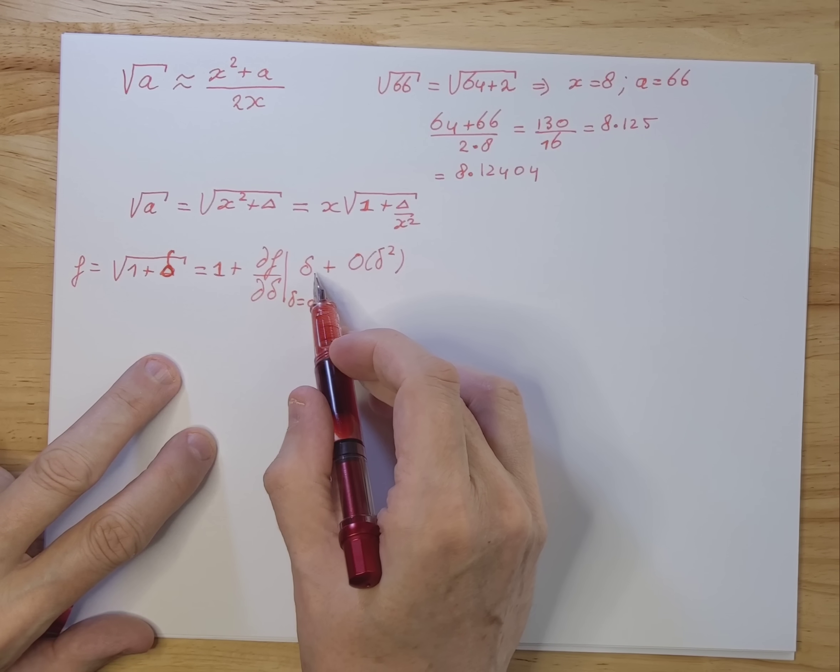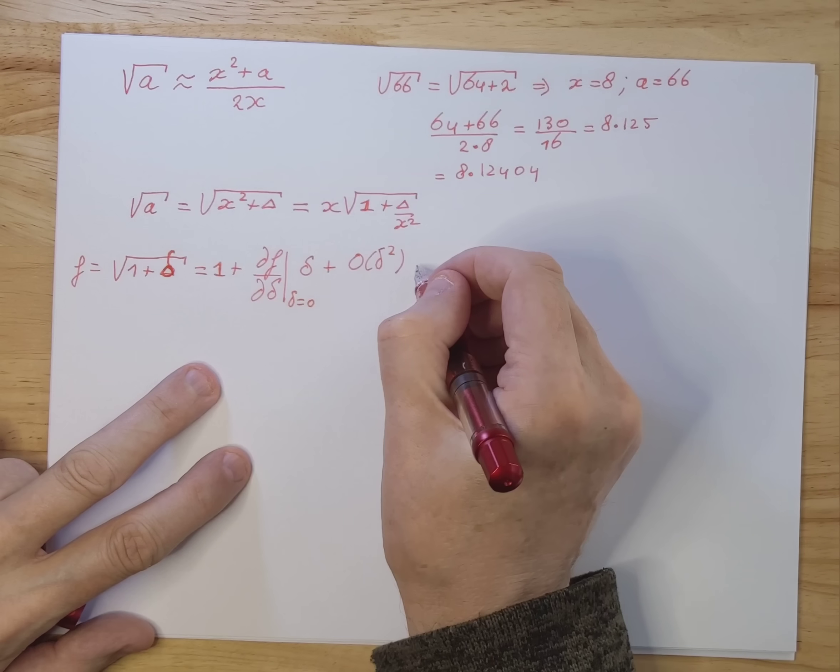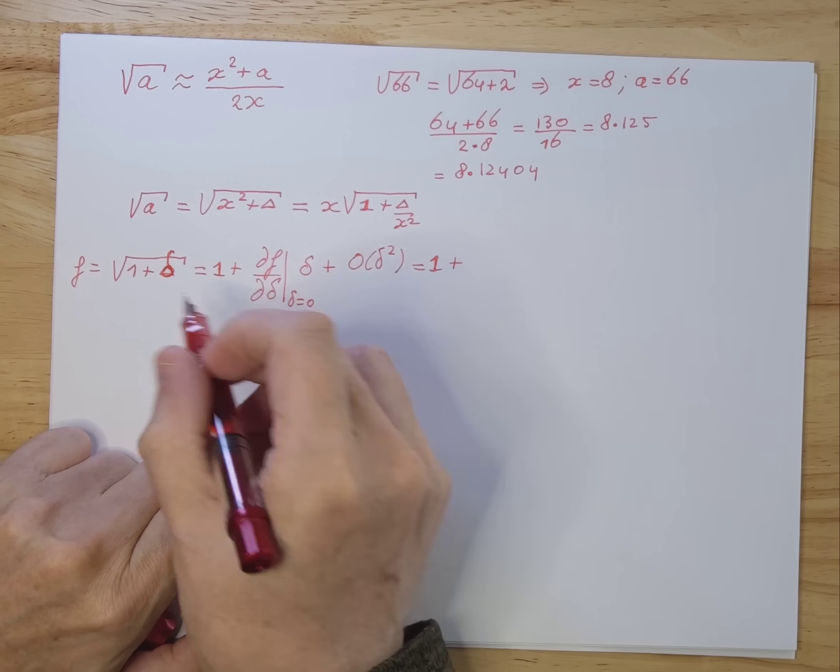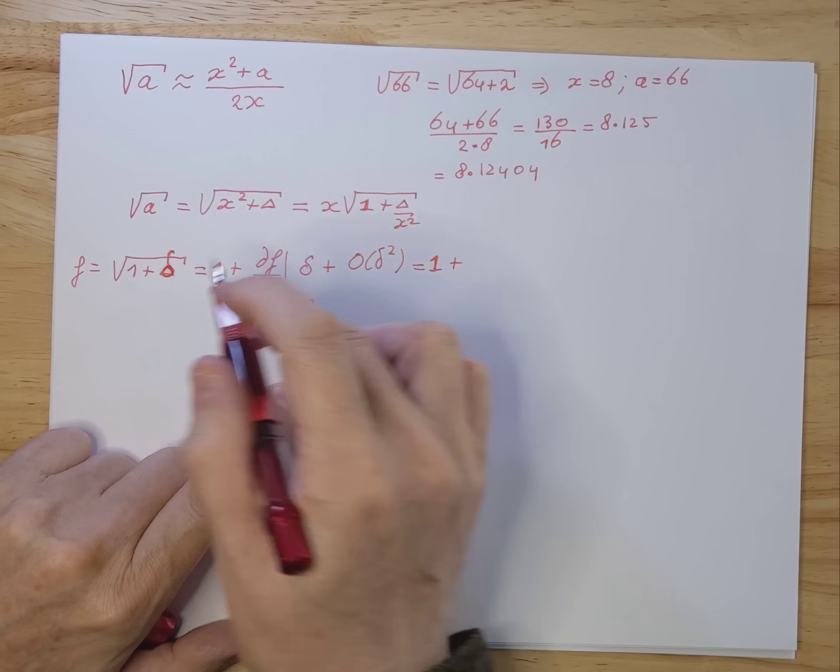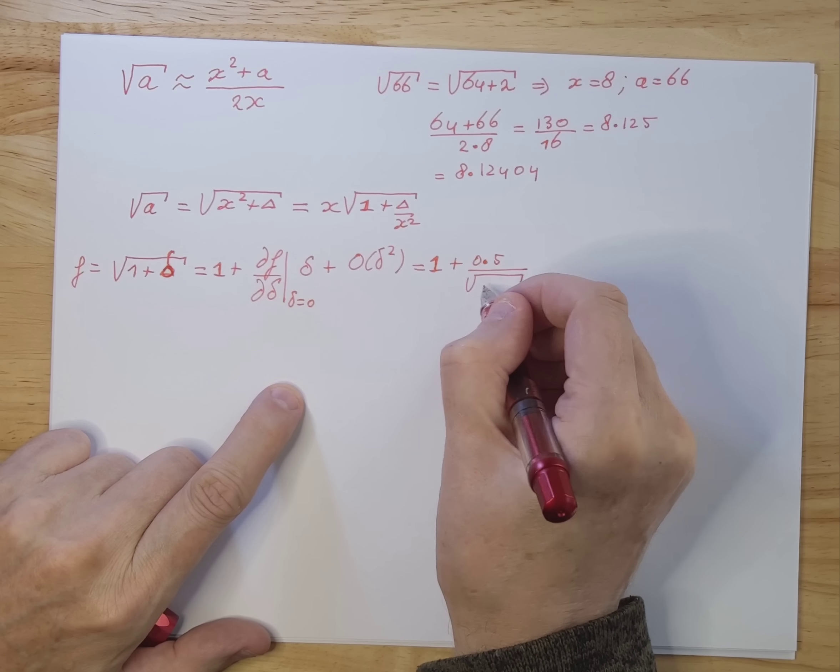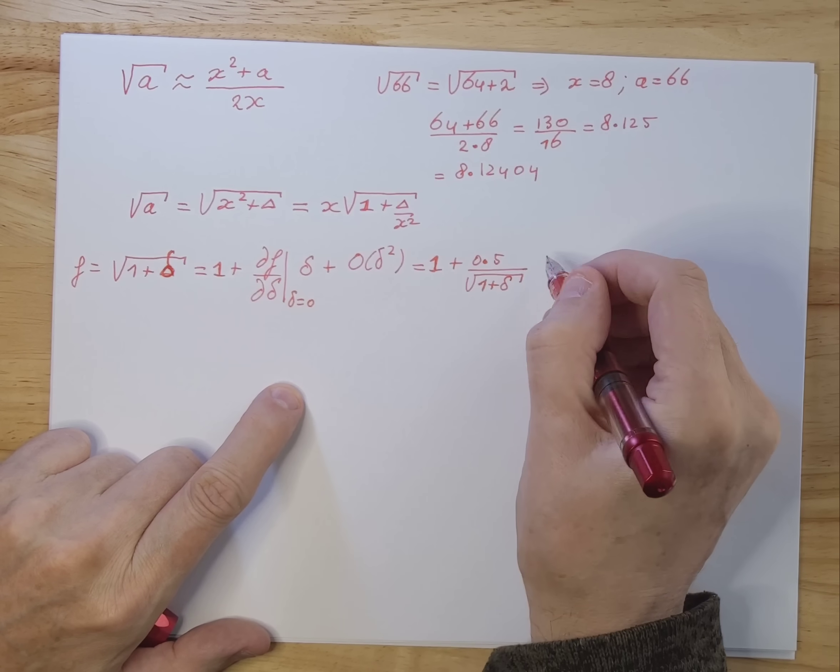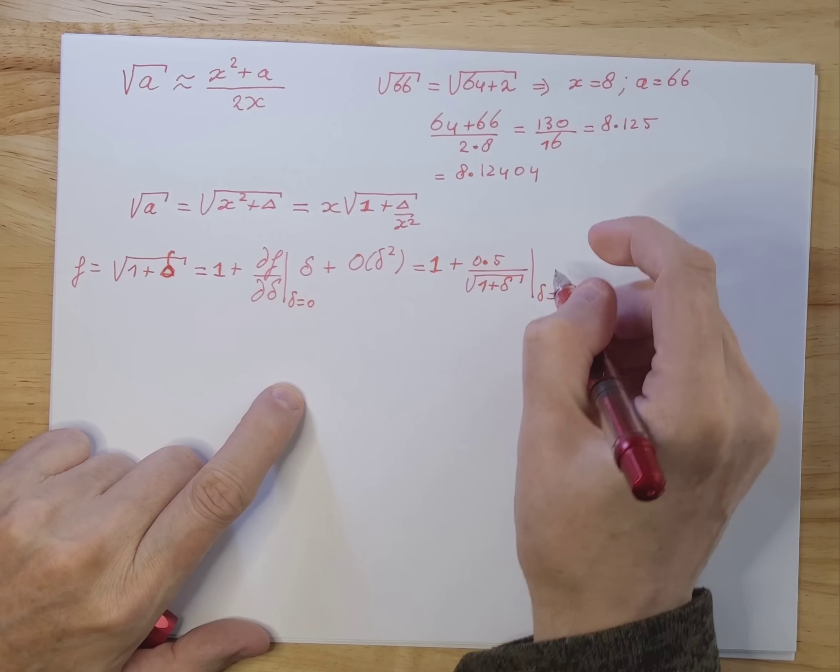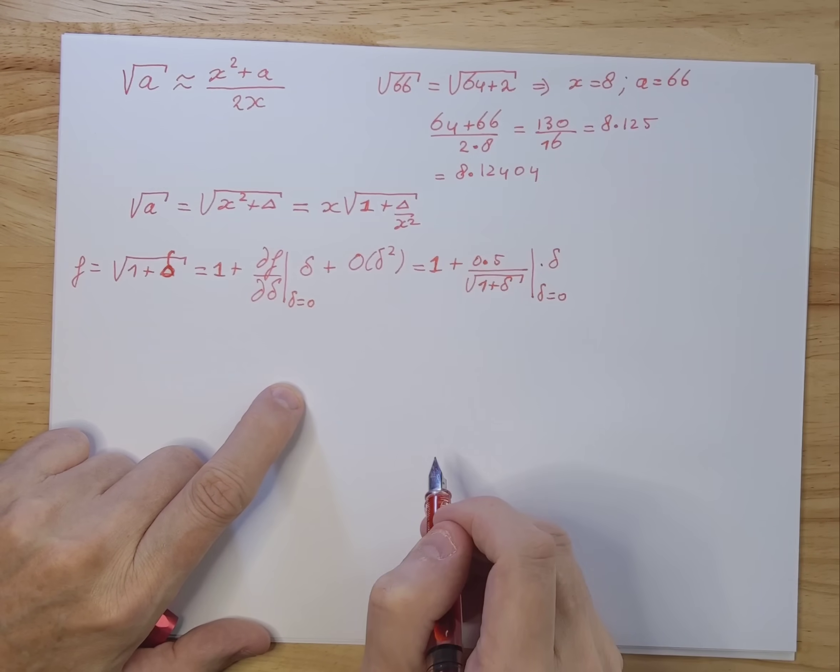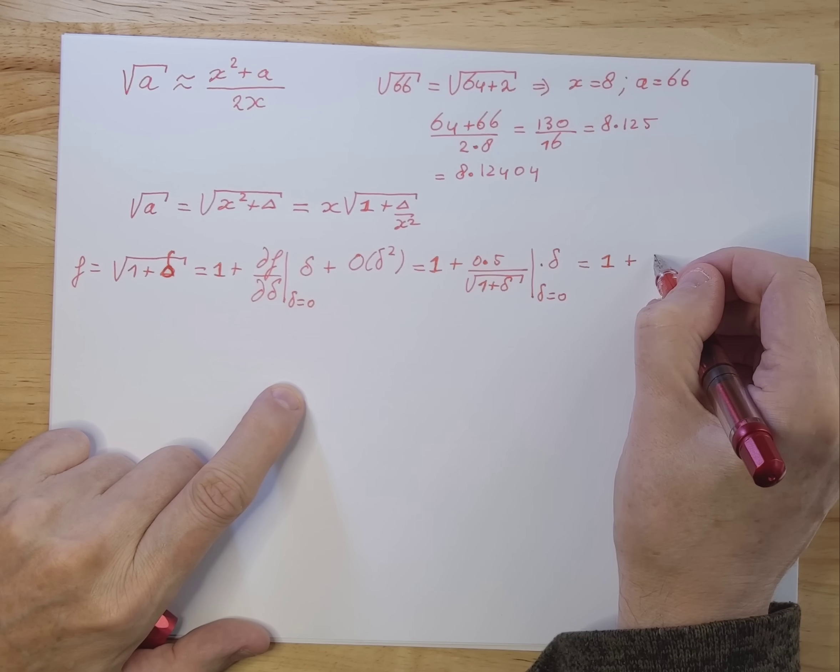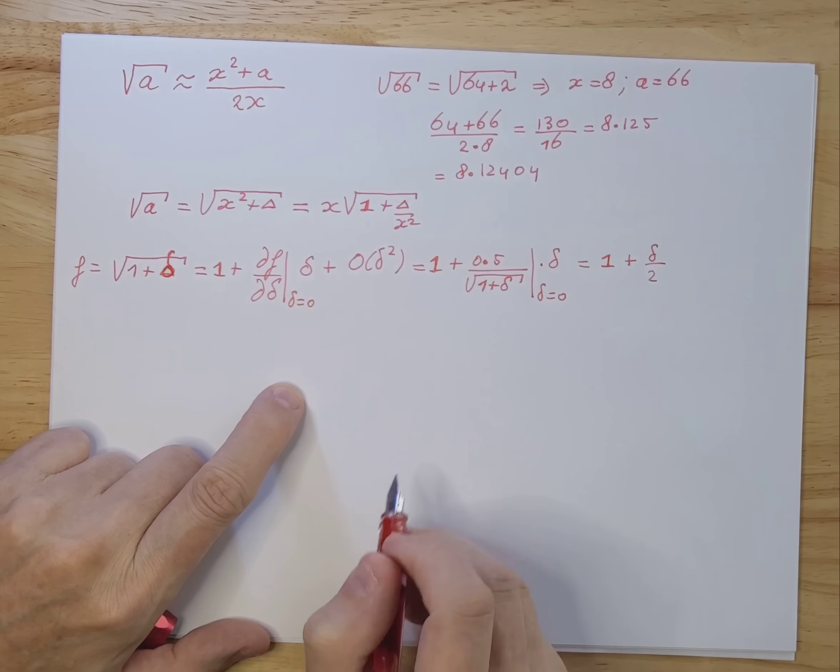So if we work this out, we get 1 plus df d delta. So we have to differentiate this with respect to delta. You get 0.5 divided by the square root of 1 plus delta, times the derivative of this, which happens to be 1. We develop that around delta equals 0, times delta.